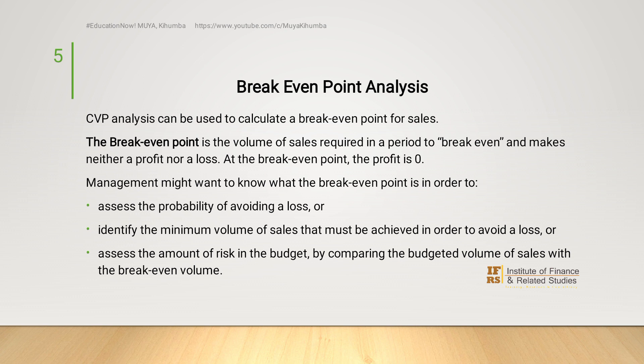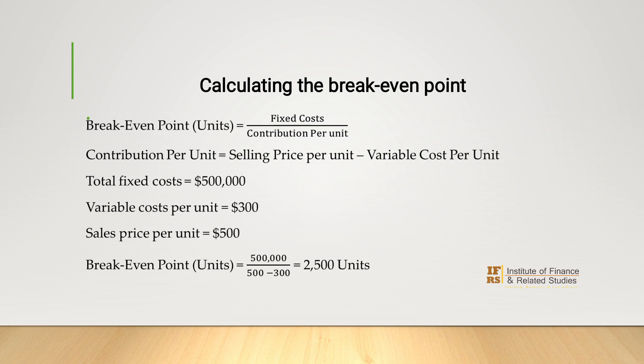Why would management want to know about the break-even point? First, they would want to know the profitability they would have to make in order to avoid a loss. Or they would need to identify the minimum volume of sales that must be achieved in order to avoid a loss. Or they need to assess the amount of risk in the budget by comparing the budgeted volume of sales with the break-even volume. The break-even point in units is computed as fixed cost divided by contribution per unit, where contribution per unit is the selling price per unit minus variable cost per unit.